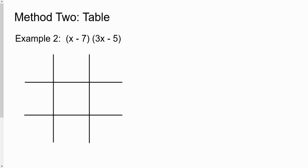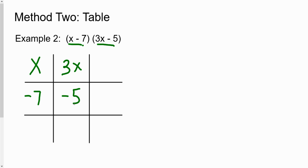The second method is called the table method. It seems confusing at first but it's a great way to prepare you for factoring later on. First, you set up a tic-tac-toe board — just a table. Then take the two binomials and write them in vertically: x minus seven as the first binomial and three x minus five as the second. Your answer will end up in the last column.